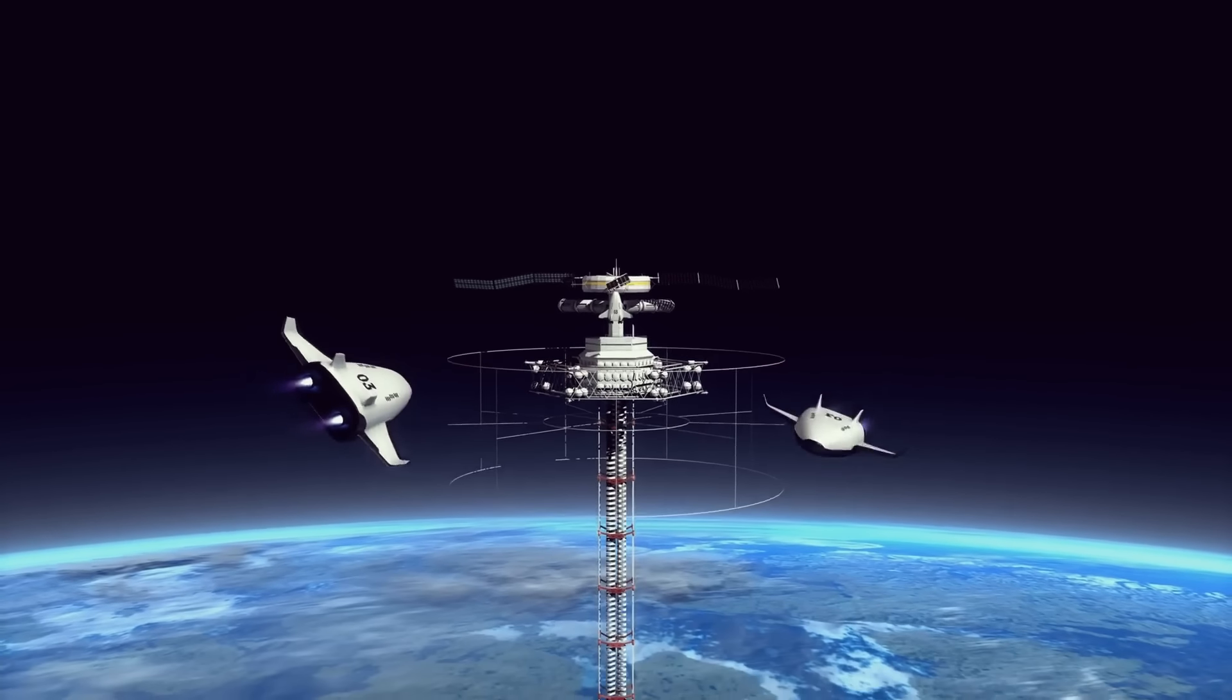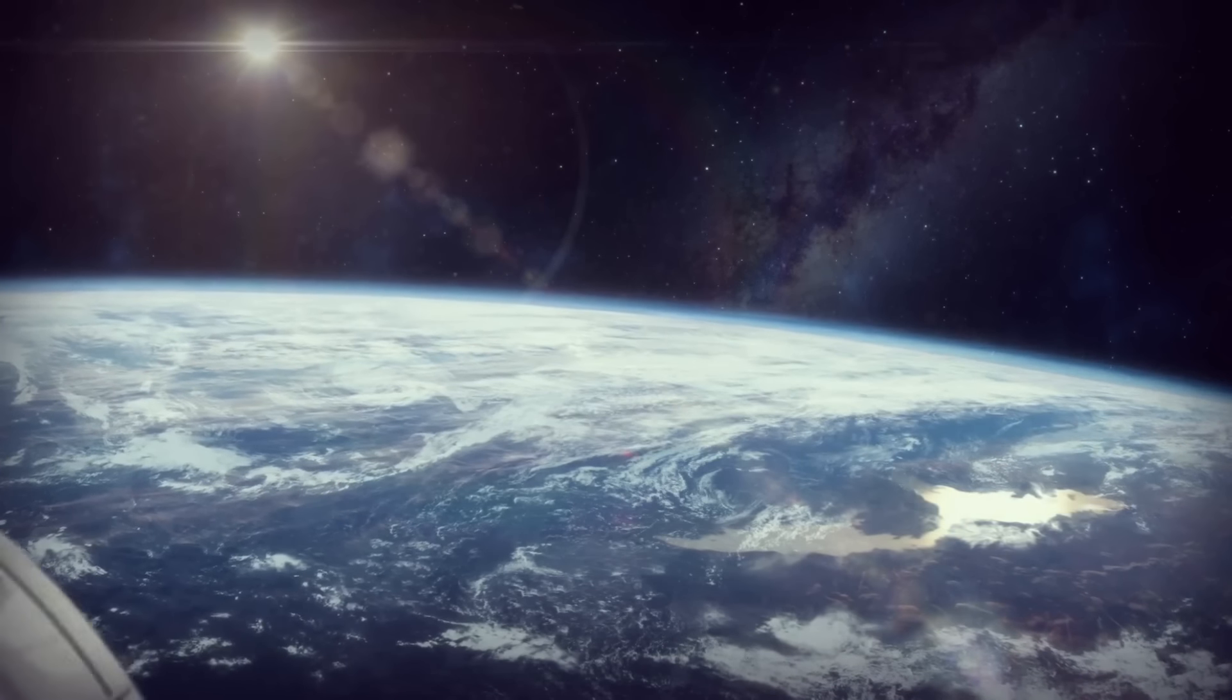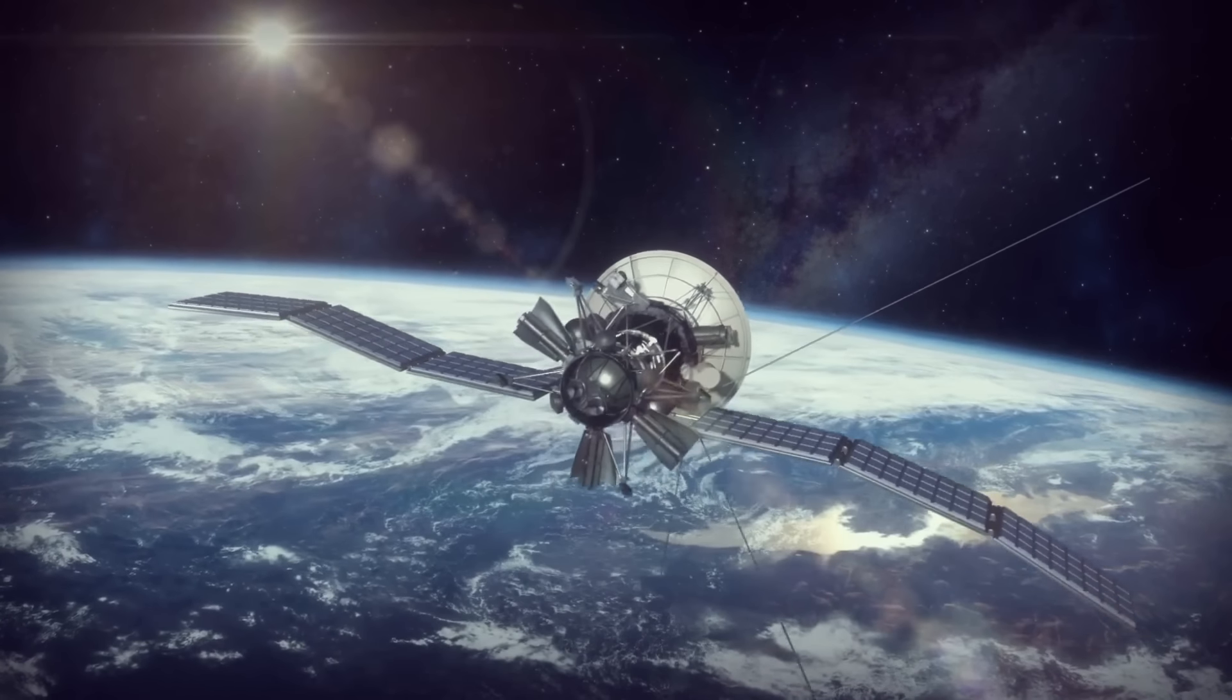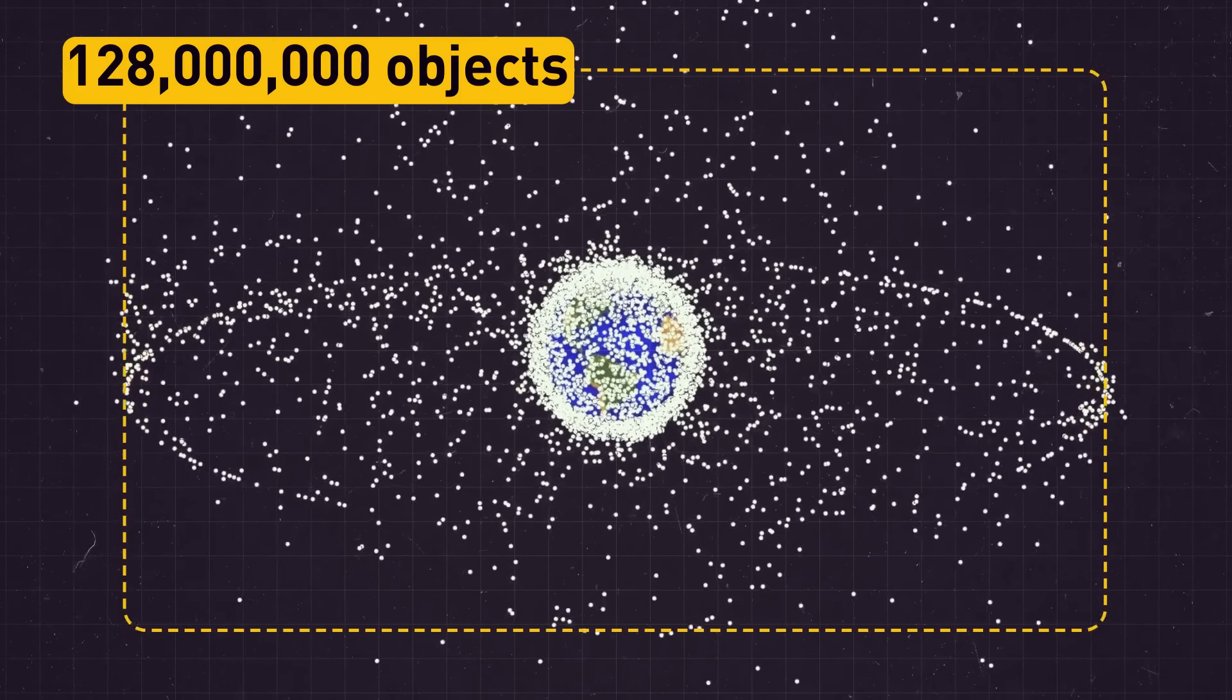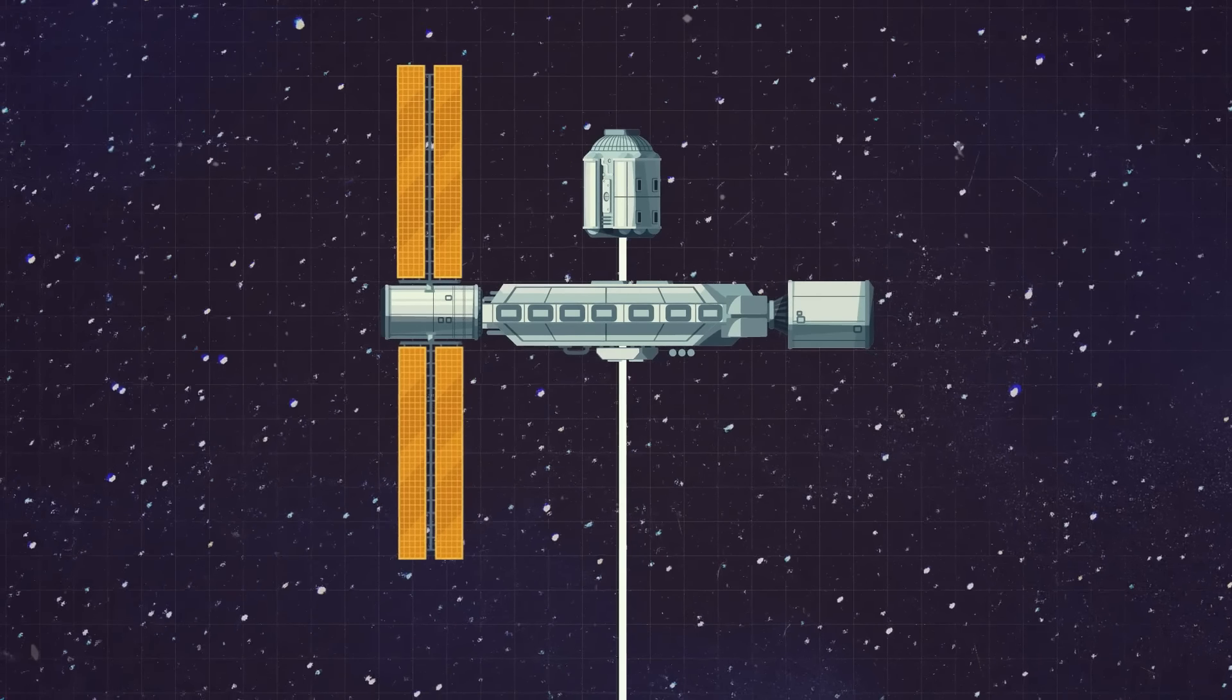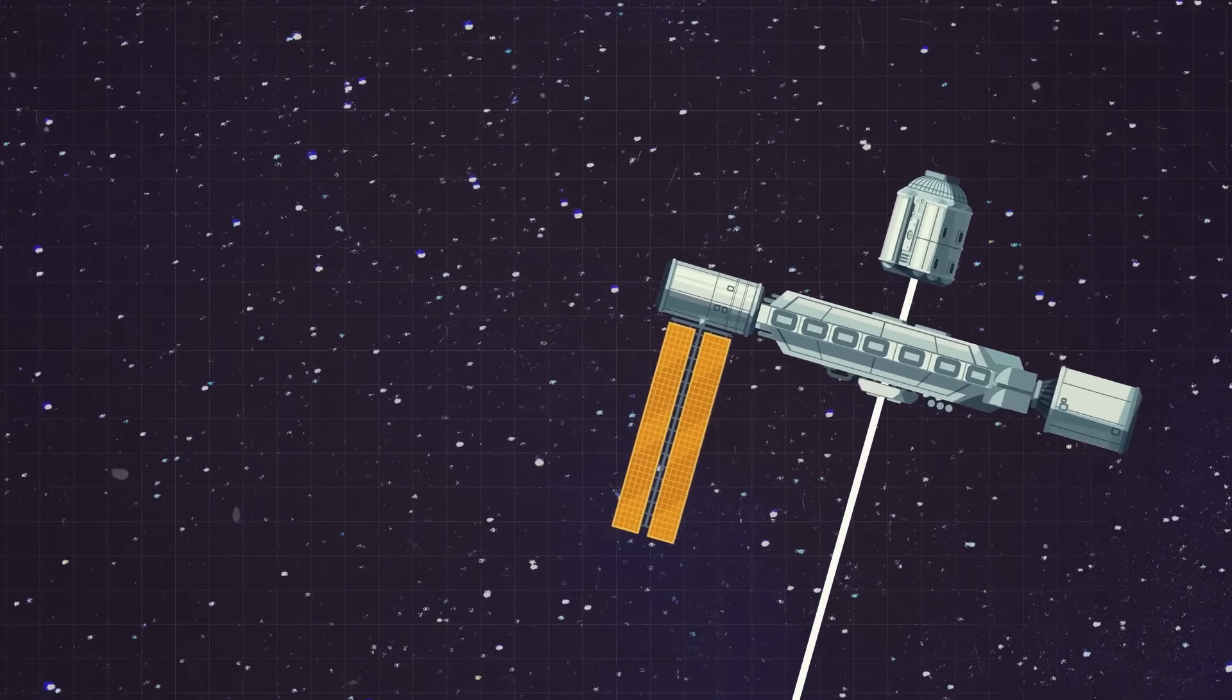Now, everything looks perfect on paper. But NASA's main reason why they chose not to go along with this project is that, right now, there are probably more than 128 million objects floating in orbit, and they might pose a real threat to the elevator. The lift could be made to withstand a few hits now and then. But getting hammered nonstop is not part of the plan.